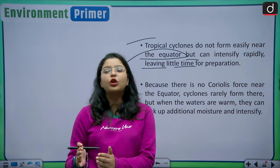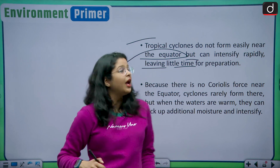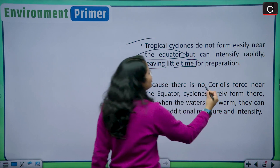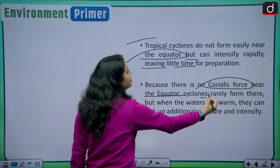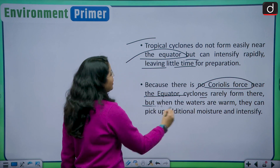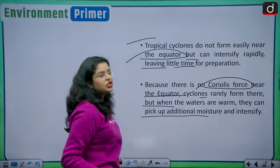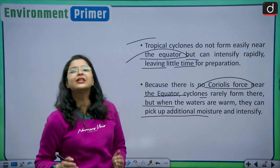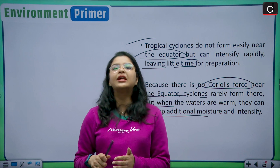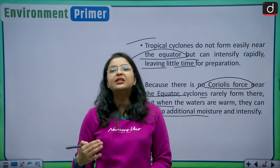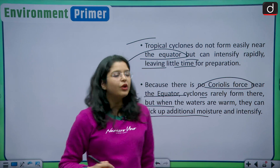Tropical cyclones do not form near the equator because there is no Coriolis force there, so cyclones rarely form in that zone. However, when the waters are warm, cyclones can pick up additional moisture and intensify rapidly. That is why the PDO phases have a huge impact on cyclone activity.